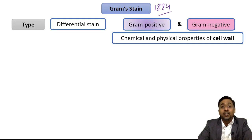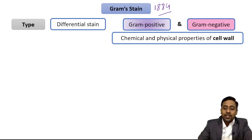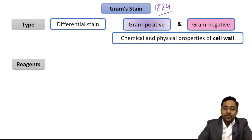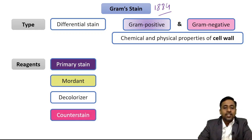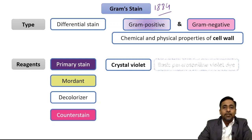The difference in the cell wall is the reason for the different color of gram-positive and gram-negative bacteria. The reagents used in gram staining are divided into four categories: first is primary stain, second is mordant, third is decolorizer, and fourth is counter stain. The primary stain commonly used is crystal violet, which is basically a basic para-rosaniline violet dye.